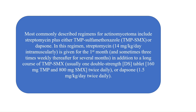The most commonly described regimens for Actinomycetoma include Streptomycin plus either TMP-sulfamethoxazole or Dapsone. Streptomycin is given at 14 mg per kg per day intramuscularly for 1 month, then 3 times weekly for several months, along with TMP-SMX one double-strength tablet (160 mg TMP and 800 mg SMX) twice daily, or Dapsone 1.5 mg per kg per day twice daily.